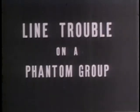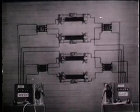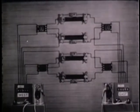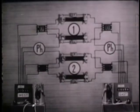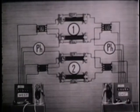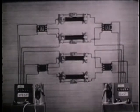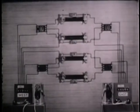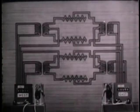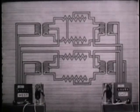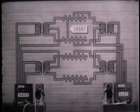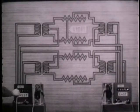Now for some typical examples showing the effect of line trouble on a phantom group. This phantom group consists of three telephone circuits. Here, telephone ringing and voice currents act alike, so we will confine our demonstration to ringing current only. If one of the side circuits is accidentally shorted, its reaction is the same as a shorted simplex.